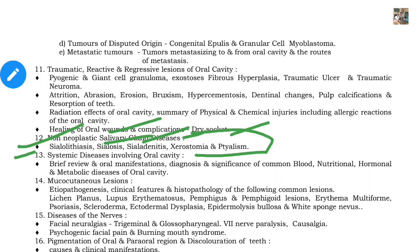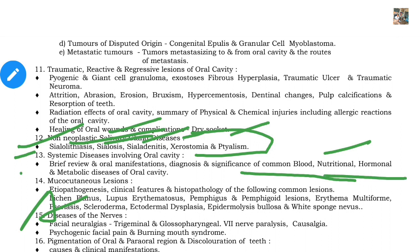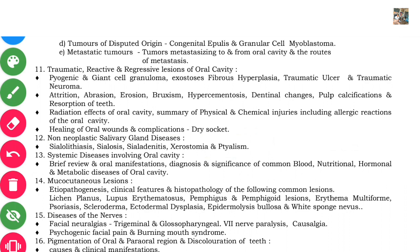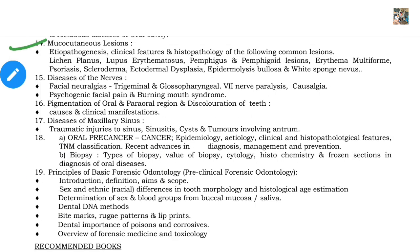Chapter 13 covers systemic diseases involving the oral cavity — systemic meaning related to the whole body. This includes common blood disorders like hemophilia and von Willebrand disease, nutritional deficiencies (vitamin A, vitamin B, and other vitamins), and hormonal and metabolic diseases of the oral cavity.